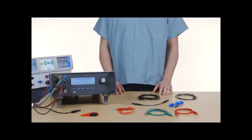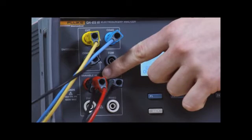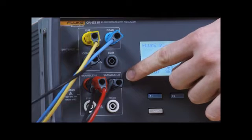For all HF leakage measurements, the QAES-3 places a 200 ohm load resistance from the variable high jack to the variable low jack and measures the leakage current through that load.